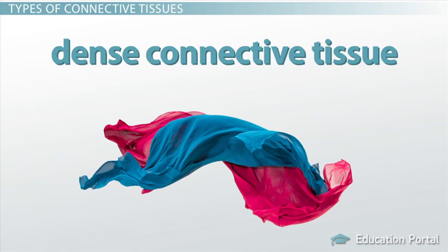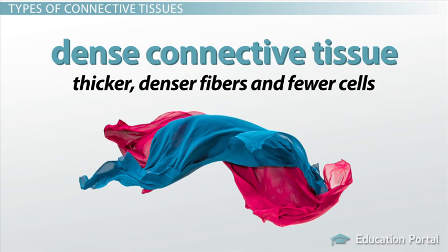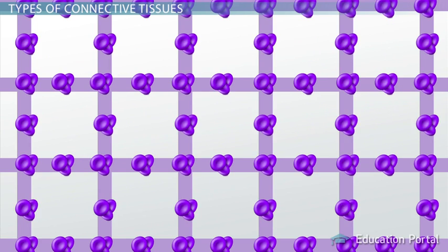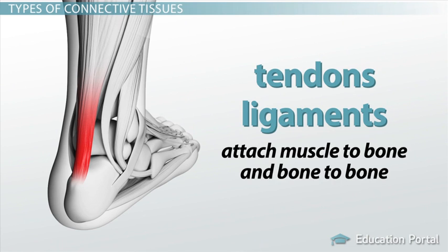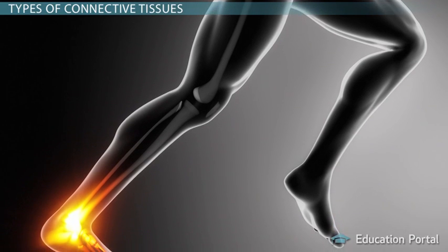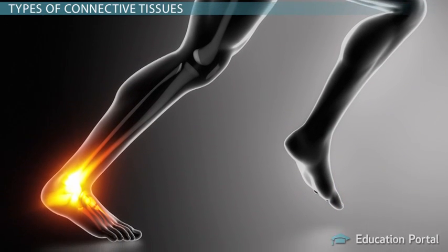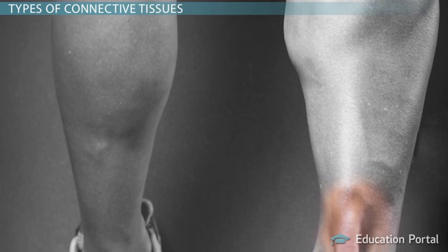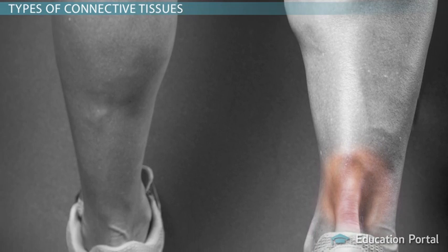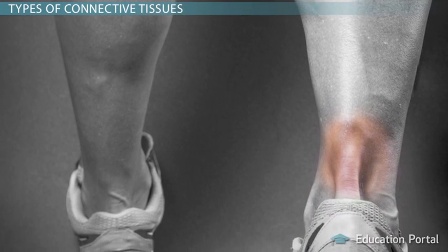Next, there is dense connective tissue. It has thicker, denser fibers and fewer cells. The matrix is made up mostly of collagen fibers, with fibroblasts arranged in rows. This type of connective tissue forms tendons and ligaments, which attach muscle to bone and bone to bone, respectively. If you feel the back of your leg where your heel meets your ankle, you will locate your Achilles tendon. You can feel that it is very firm and tight. It is important to have strong connections between muscle and bone for our body to move properly.